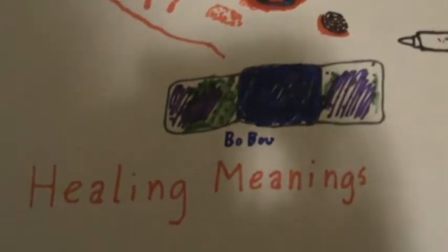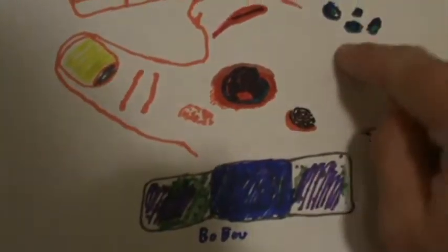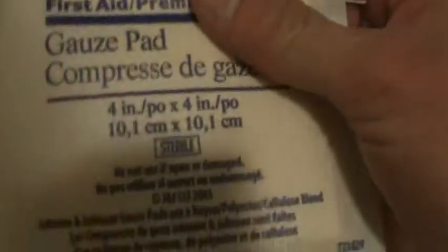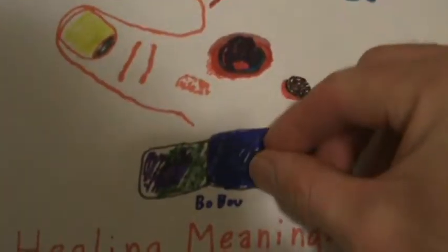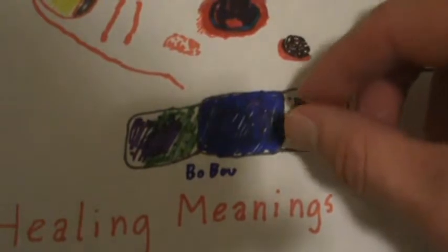Basically talking about, with the bandaid for healing meanings — I have some examples here, and I also have what you call a gauze pad, a first aid pad. I've had these for quite several years. If most of us have had any type of injury, such as stitches or anything related to surgery, you have those pads where you open them up and place the bandage over the wound to prevent irritation and of course infection.